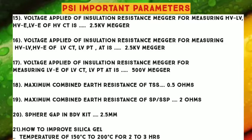Number 17: Voltage applied for Insulation Resistance measurement for LV-A of LV CT, LV PT, and Auxiliary Transformer is 500 Volts Megger. Number 18: Maximum Combined Earth Resistance of TSS — 0.5 Ohms. Number 19: Maximum Combined Earth Resistance of SP and SSP — 2 Ohms.